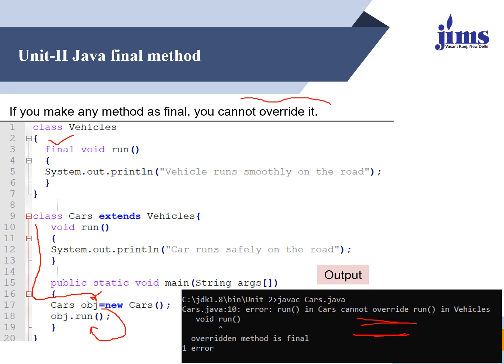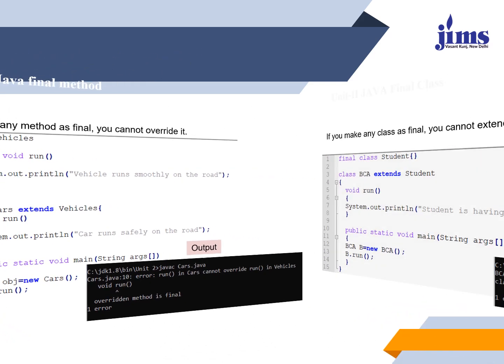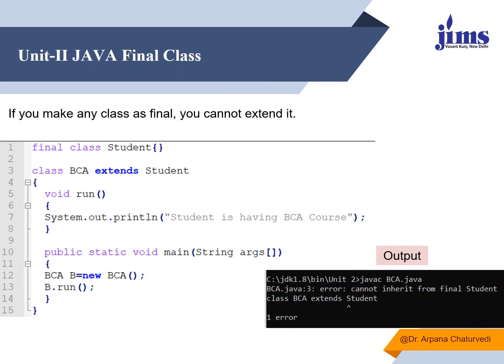You cannot override a final method whenever you are applying the concept of inheritance. Similarly, the third way to use the final keyword is by declaring a class as final.